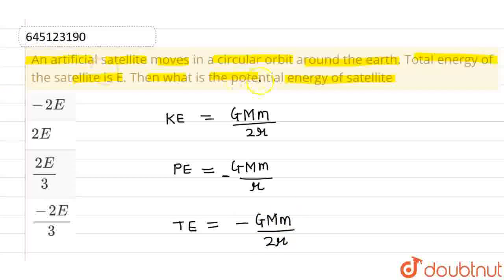Now what we are given is that the total energy of the satellite is E. So this particular thing is given as E. Now what we need to find out, we have to find out potential energy.